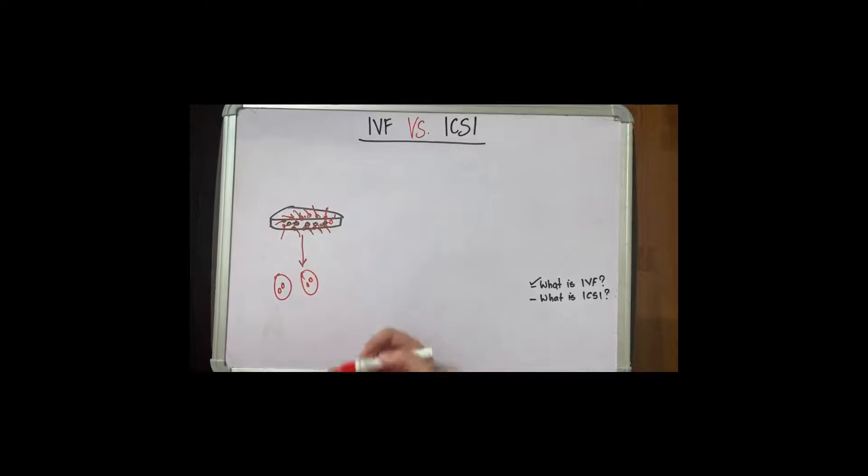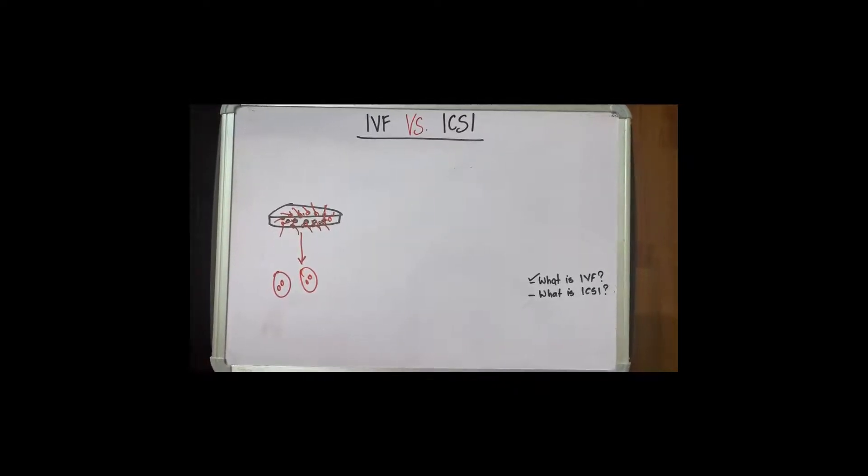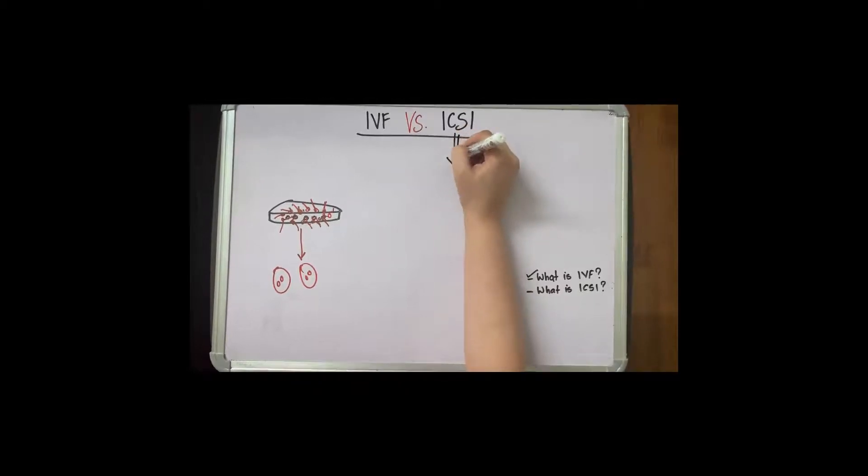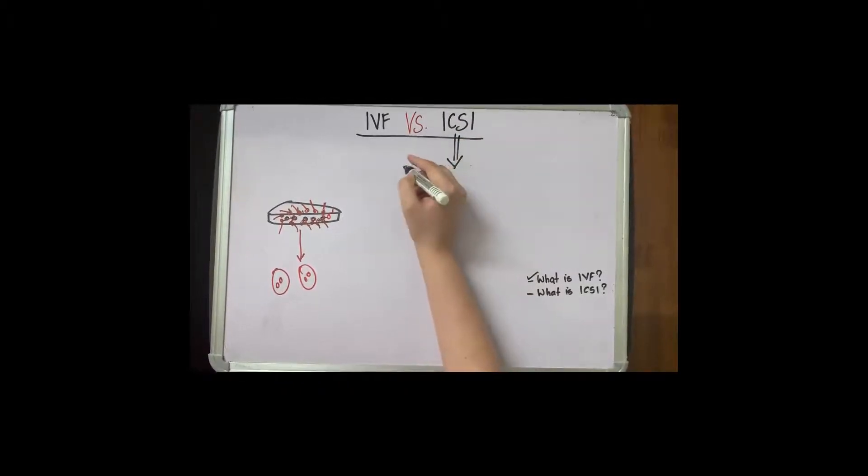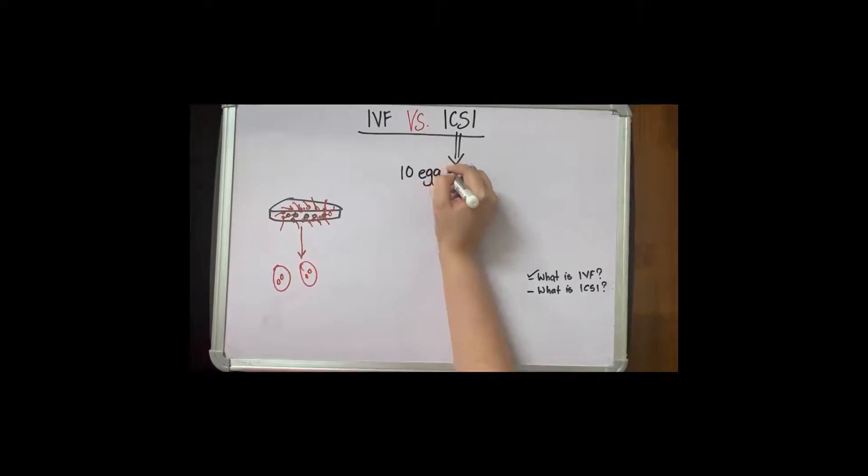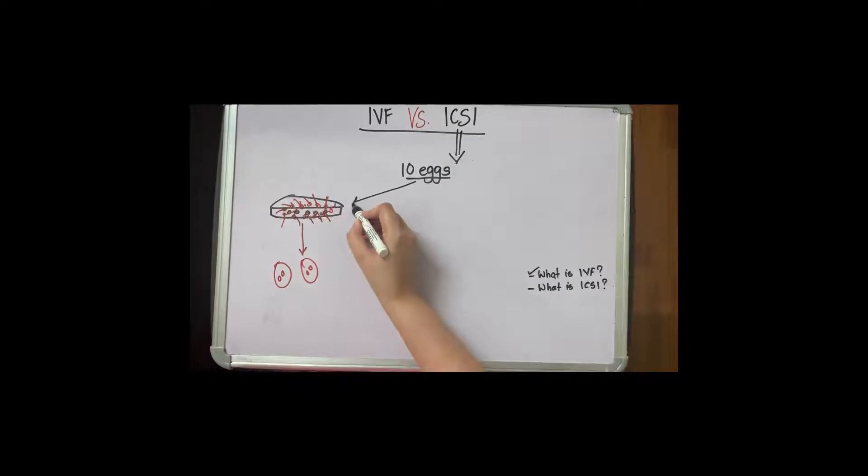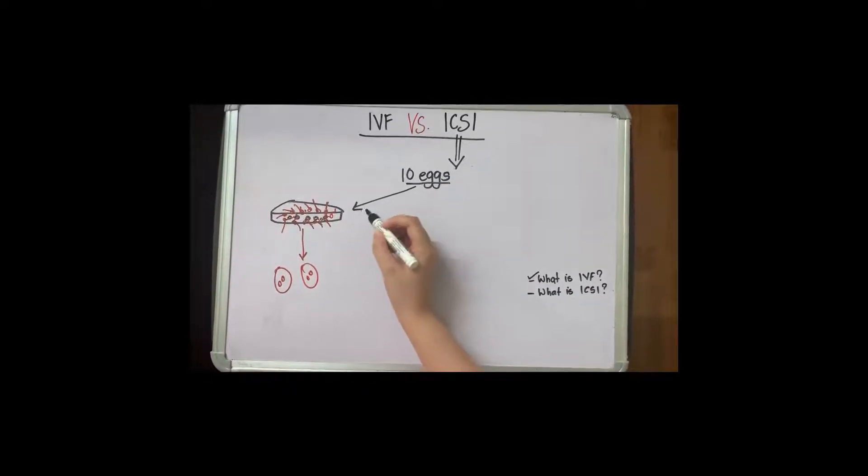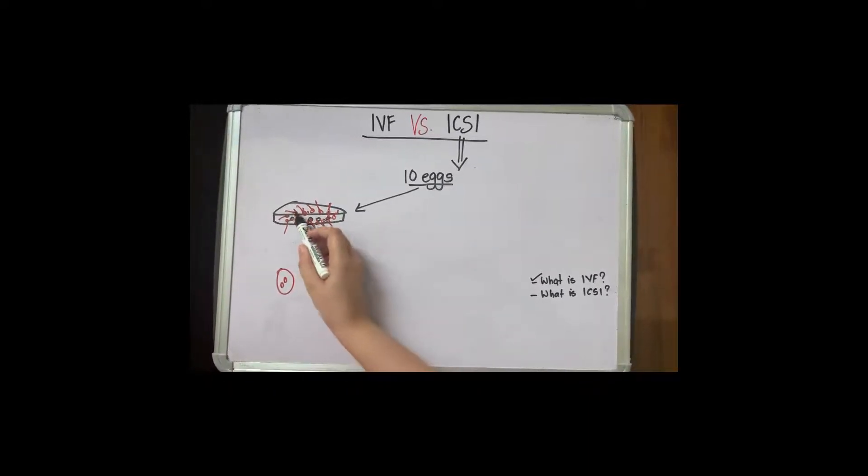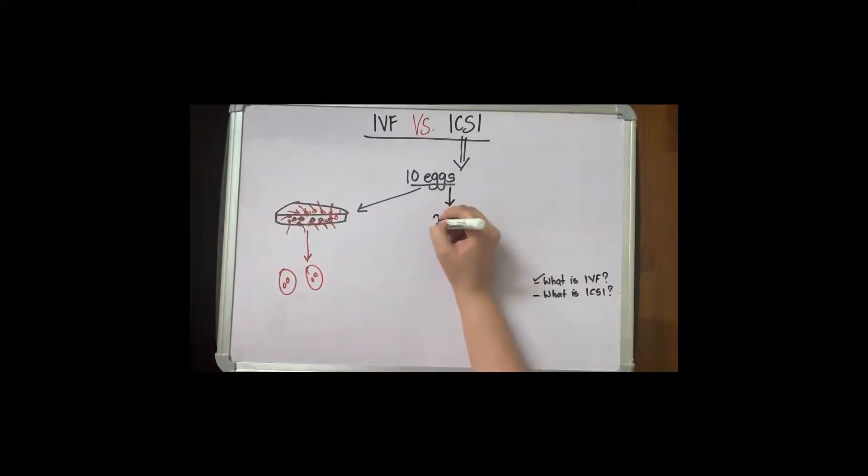Now ICSI is something which is more widely used. Here what happens is that say you have 10 eggs retrieved. In IVF what you did is you just took these 10 eggs without checking for their maturity and put them with the sperms.